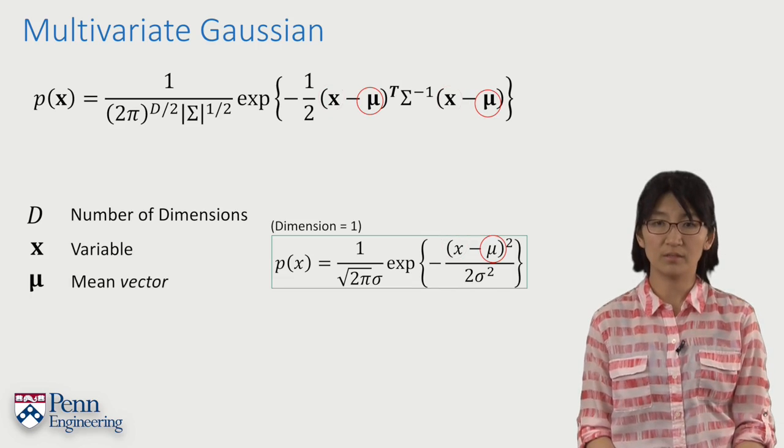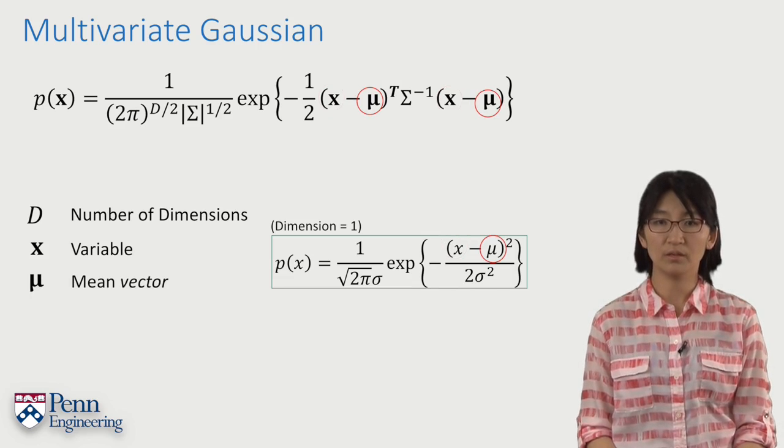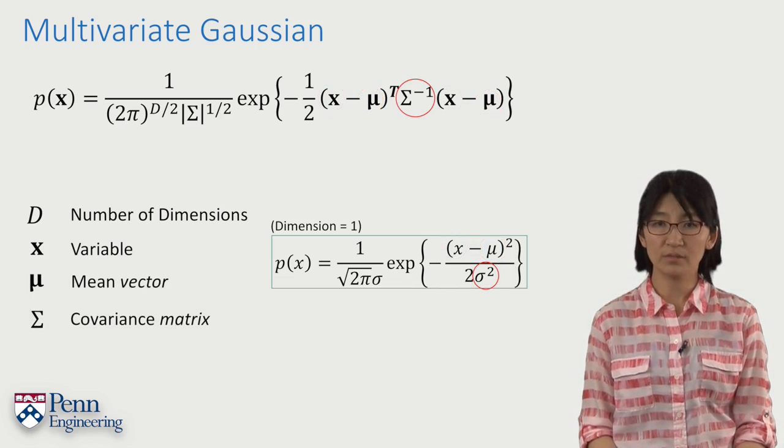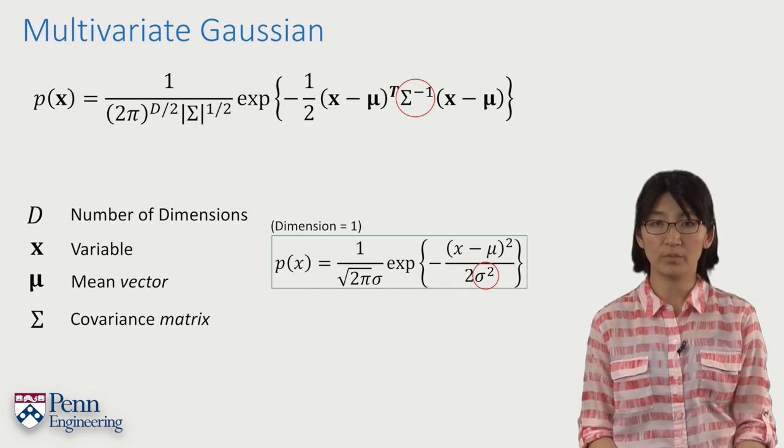In contrast to the 1D case, μ, our mean, is now a vector, and Σ, our covariance matrix, is a square matrix.